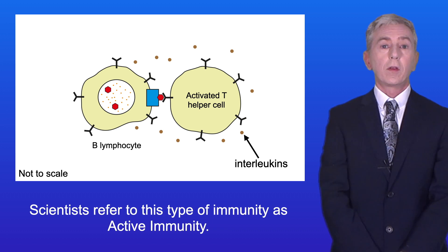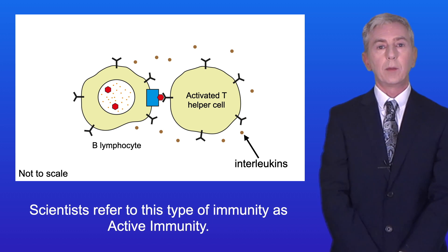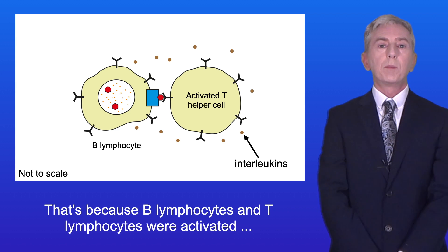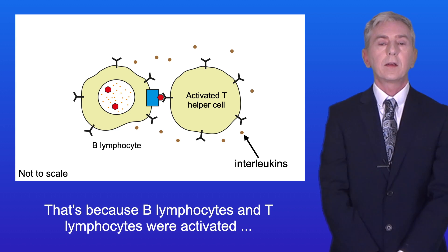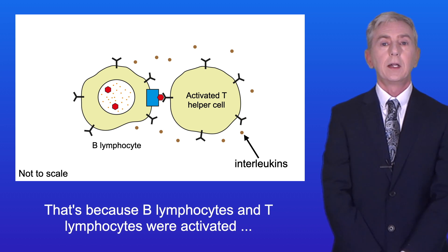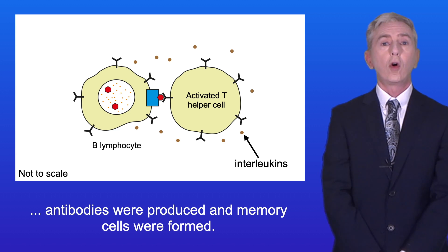Scientists refer to this type of immunity as active immunity. That's because B lymphocytes and T lymphocytes were activated, antibodies were produced, and memory cells were formed.